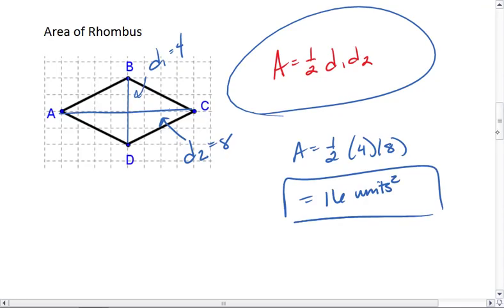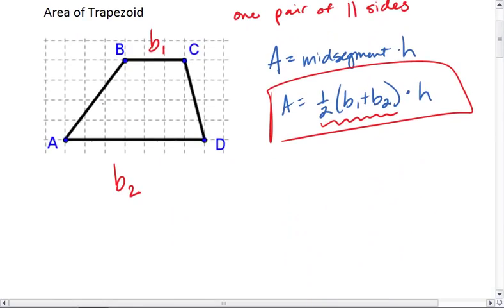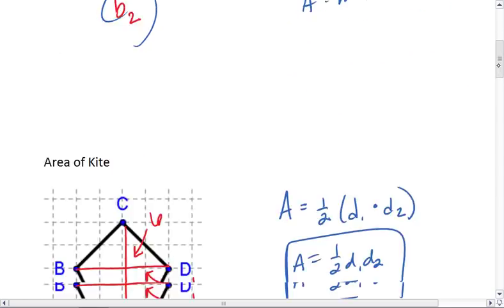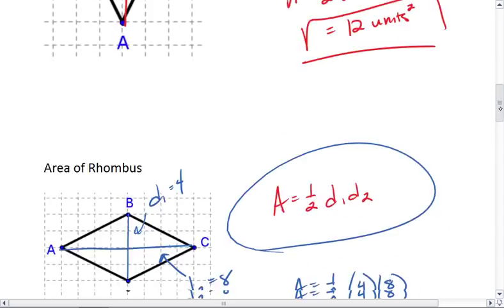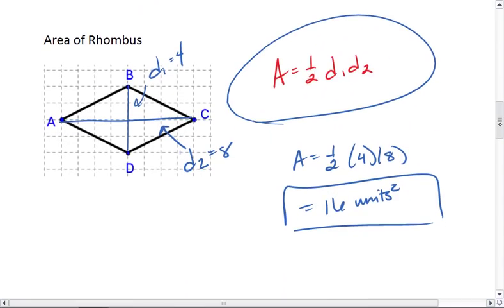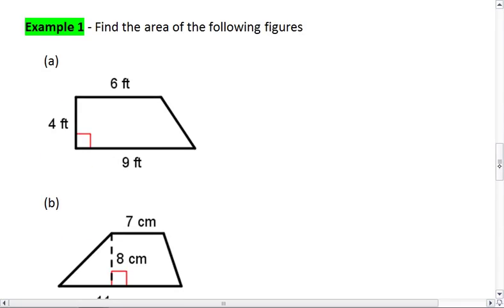Those are your three new formulas. For a trapezoid, find the mid-segment, which is the average of the two bases, times the height. For a kite, it's 1/2 of the two diagonals multiplied together. For a rhombus, it's the same thing: 1/2 of the two diagonals multiplied together. Now we'll look at some examples.